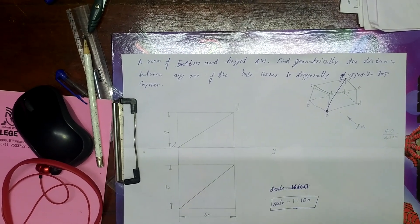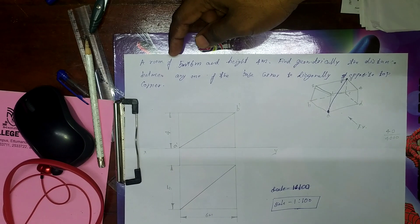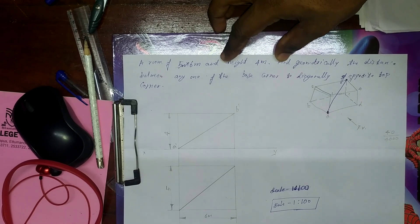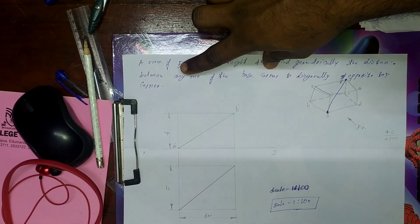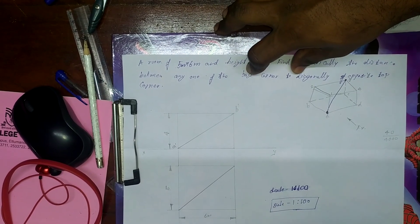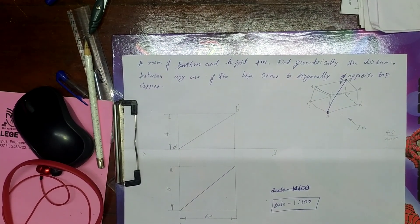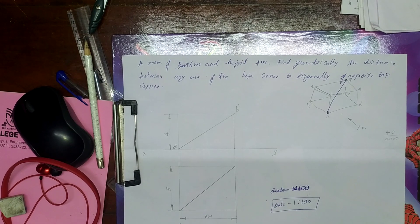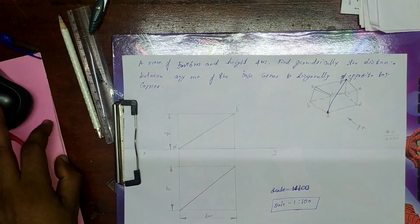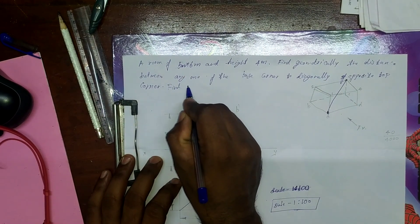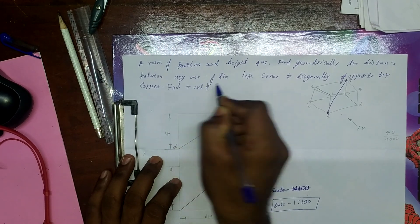This is the question: a room of 5 into 6 meter and height 4 meter. Find geometrically the distance between any one of the base corners to the diagonally opposite top corner. It's a university question and an application-level question from projection of lines. Sometimes it may ask the inclination with the floor, inclination with the HP, and inclination with the VP — finding theta and phi angles.